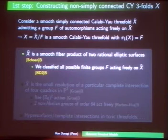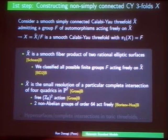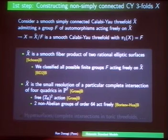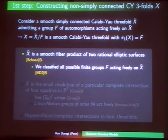The other example is X-tilde as the small resolution of a particular complete intersection of four quadrics in P7, investigated by Mark Gross and collaborators. They found a free action of Z8 squared on it, giving 64 Wilson lines — the world record for a fundamental group of a Calabi-Yau. It seems we have now succeeded in building a good heterotic compactification based on that, and there are also two non-abelian groups of order 64 acting freely on the same space.